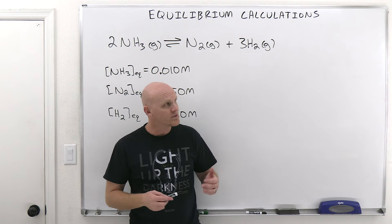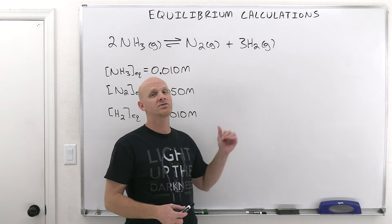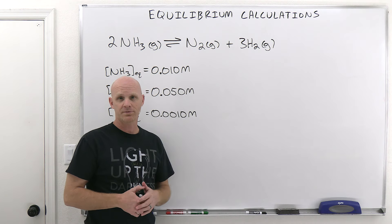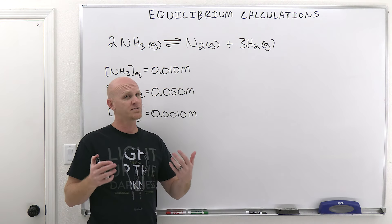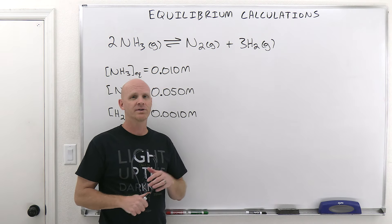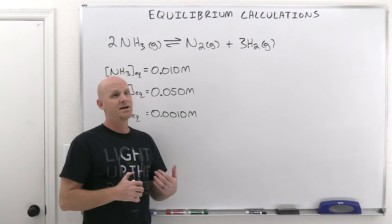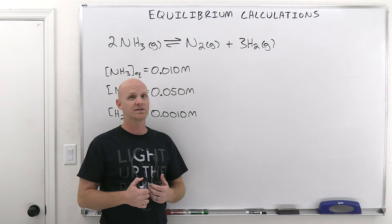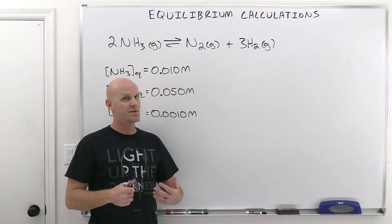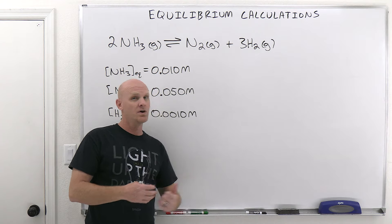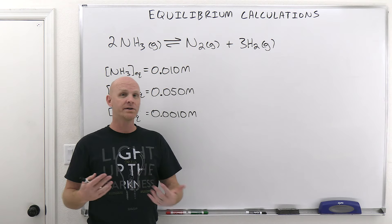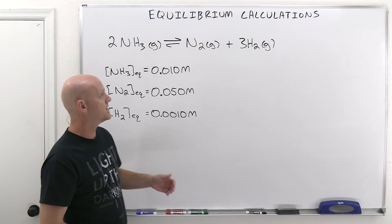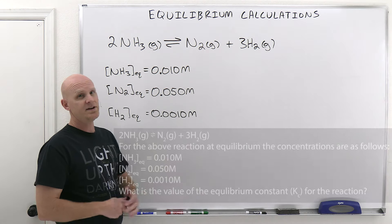The first calculation we're going to take a look at is not going to involve an ICE table. It's one of the easier types of calculations, although there's nothing really easy about any of the equilibrium calculations. One of the bigger parts is just realizing what kind of calculation you've really got to set up — is it one of those ICE tables or not, and how do you know? We'll definitely cover all of that and more, so we'll start with one of the easier ones.